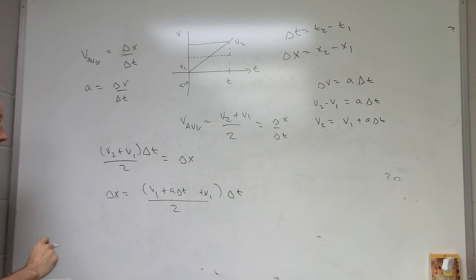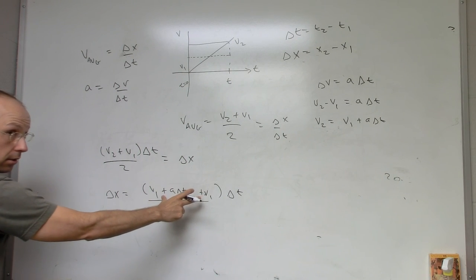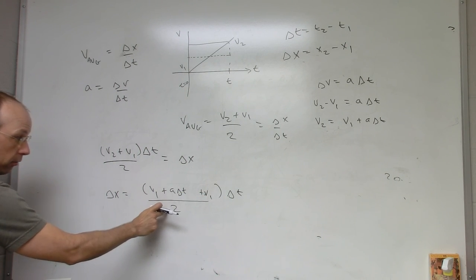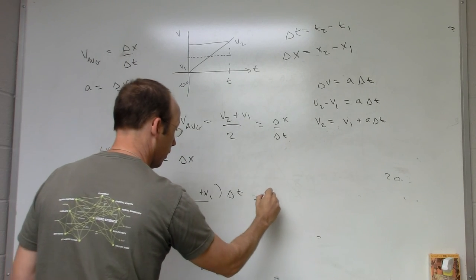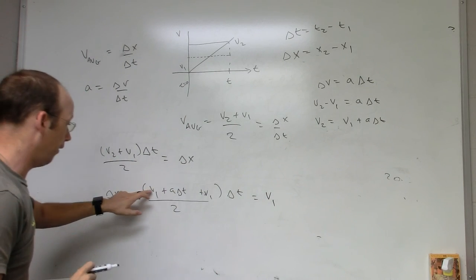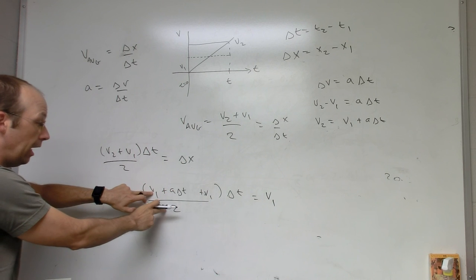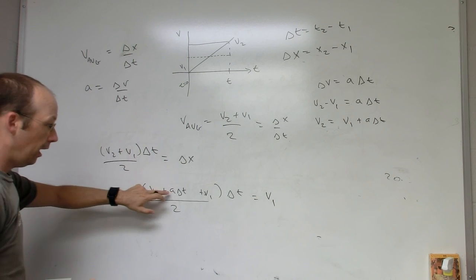Okay, so now I get 2 v1s. And I'm going to divide that by 2. So that's just going to be v1, right? I have v1 plus v1 is 2 v1. I have to divide everything in here by 2. And then I get this.